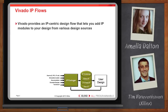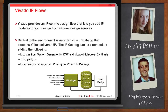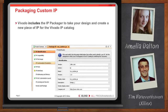Can I add my own IP to the Vivado IP catalog? Absolutely. We designed the Vivado IP catalog to be extensible so you can add your own IP to the catalog, or purchase IP from one of the Xilinx Alliance program members. System Generator for DSP and Vivado high-level synthesis are also integrated so you can easily create new IP from those environments. You can even build a new piece of IP by connecting together multiple IP in your design.